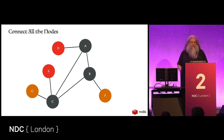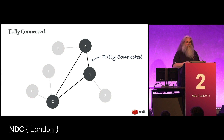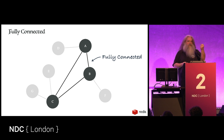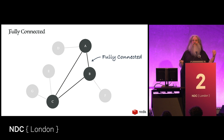If you connect all the nodes you've got what's called a connected graph — there's a path between any two nodes, even if not directly. A fully connected graph means every node is connected to every other node — like those network diagrams with a big star where everything connects across the circle. The formula for the number of connections in a fully connected graph is n times n minus one.